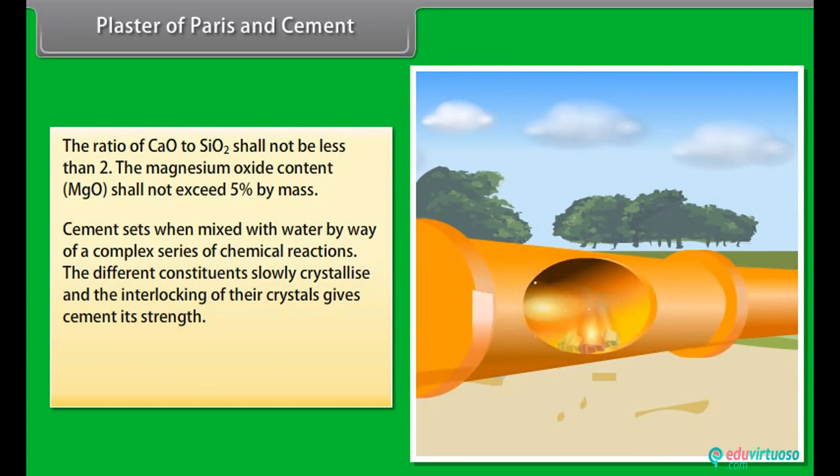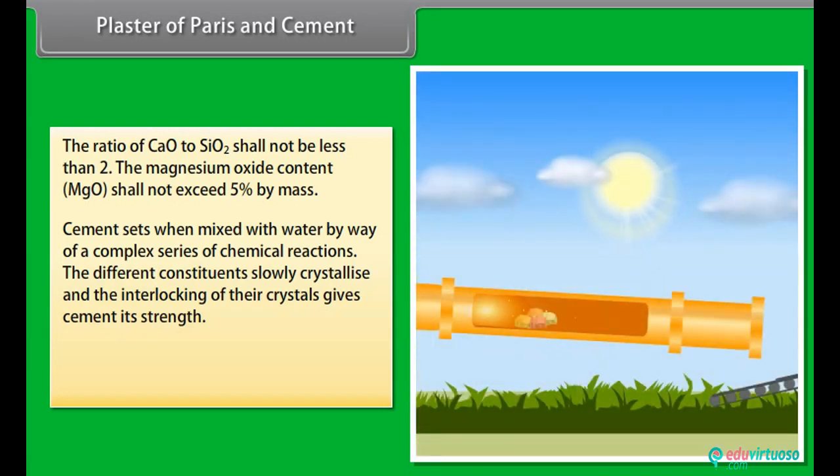Cement sets when mixed with water by way of a complex series of chemical reactions. The different constituents slowly crystallize and the interlocking of their crystals gives cement its strength. Gypsum is added to cement to increase the setting time.